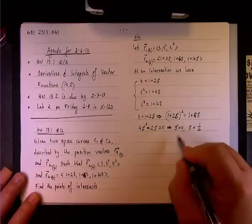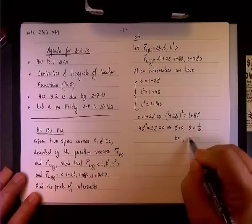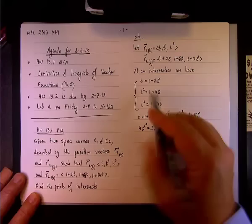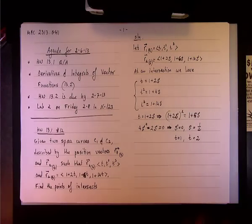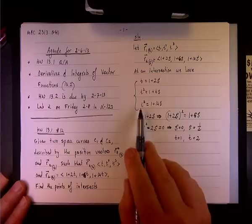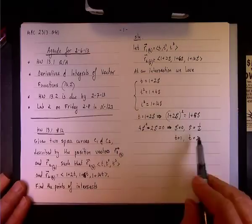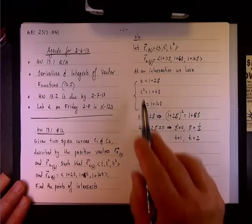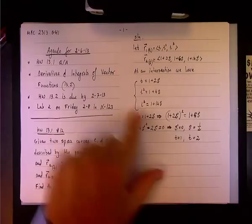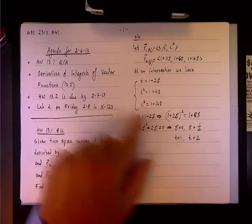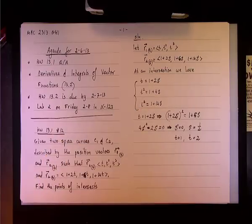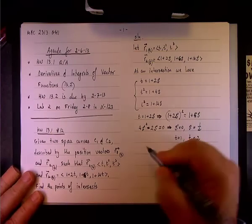The corresponding values of T: since T = 1+2s, when s = 0, T = 1; when s = 1/2, T = 1 + 2(1/2) = 2. We check the third equation: for T=1 and s=0, 1³ = 1+14(0), so 1 = 1. For T=2 and s=1/2, 2³ = 1+14(1/2), so 8 = 1+7 = 8. The third equation checks out.